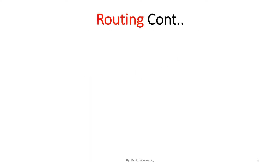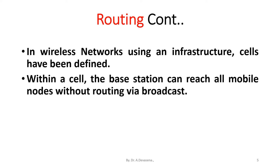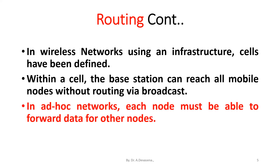In wireless networks using an infrastructure, cells have been defined. Within a cell, the base station can reach all mobile nodes without routing via broadcast. In ad hoc networks, each node must be able to forward data for other nodes.